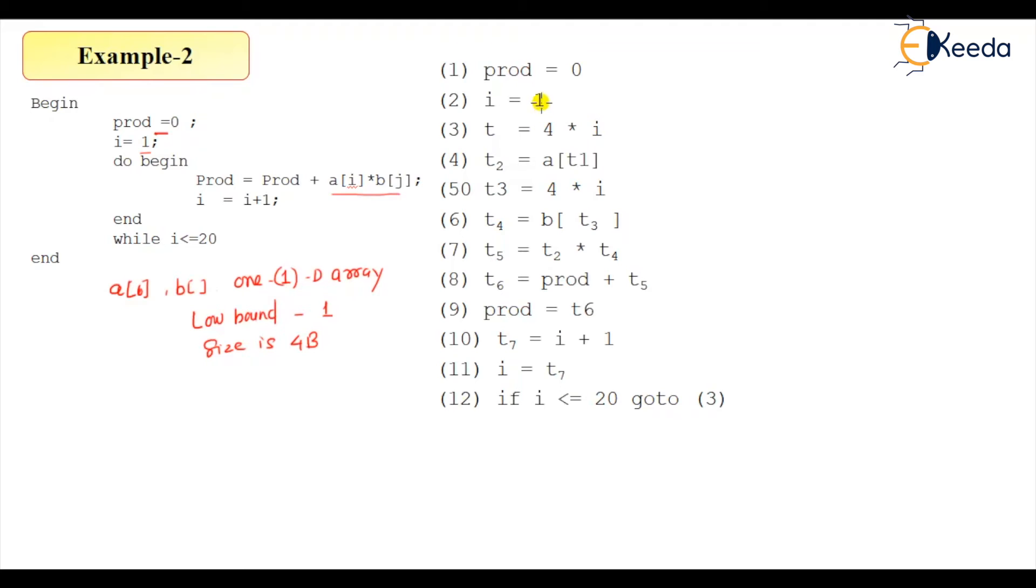Alright, so now let's analyze our leaders here. The first statement is a leader, then conditional branch and this unconditional branch instruction. So this is line 12 and it is taking the back control to this part. So this is a leader and this is another leader.